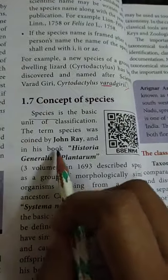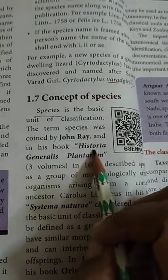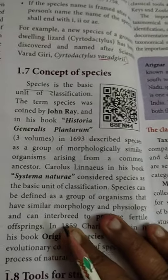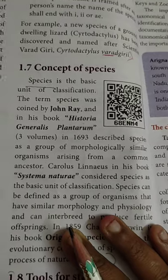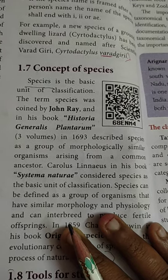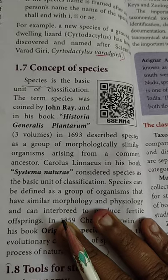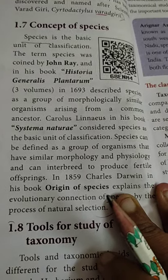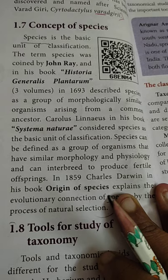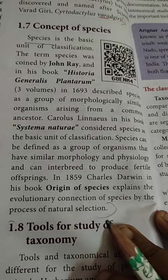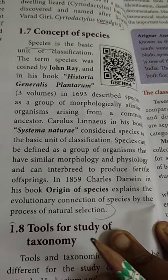Species means a kind. The term species was coined by John Ray in his book Historia Generalisus Plantarum in 1693. He described species as a group of morphologically similar organisms arising from a common ancestor. Carolus Linnaeus in his book Systema Naturae considered species as the basic unit of classification — a group of organisms with similar morphology and physiology that can interbreed to produce fertile offspring. In 1859, Charles Darwin in his book Origin of Species explained the evolutionary connection of species by the process of natural selection.